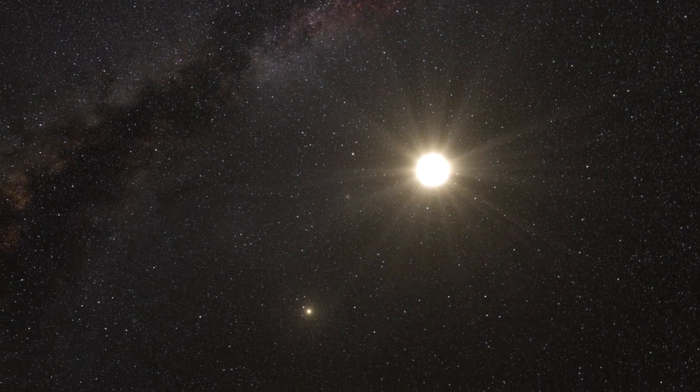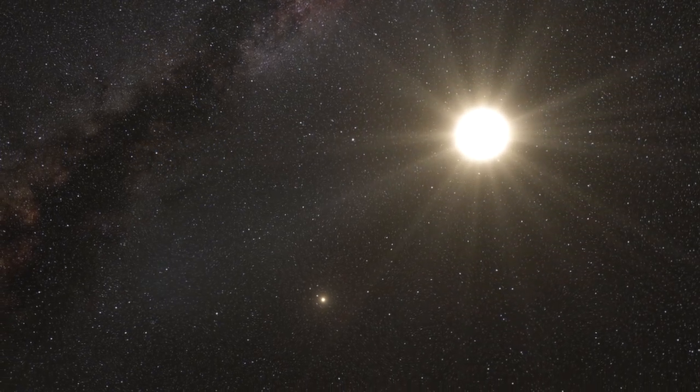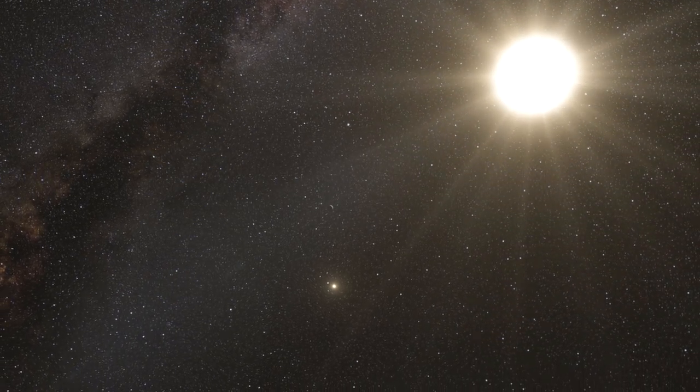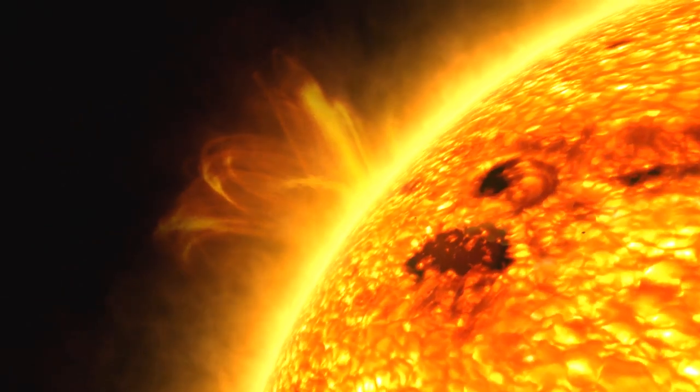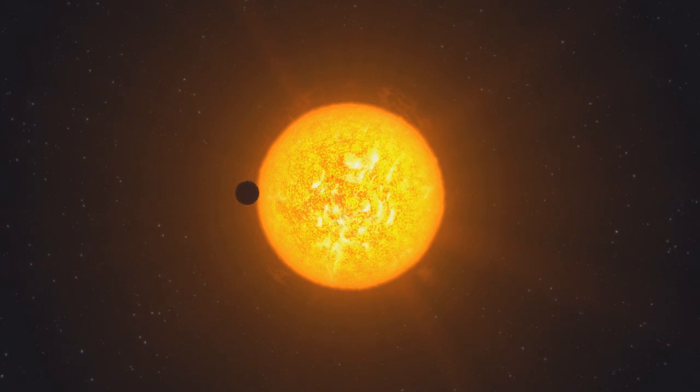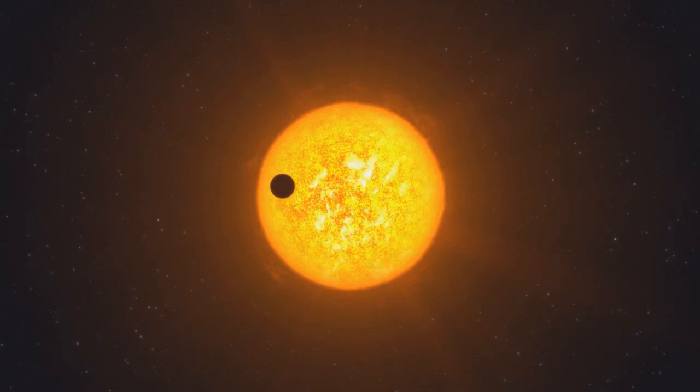Solar twins, solar analogues and solar-type stars are categories of stars based on how similar they are to our own Sun. Solar twins, stars almost identical to the Sun, are very rare. But the other classes, where the similarity is a lot less precise, are much more common.